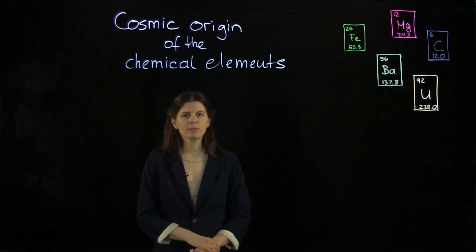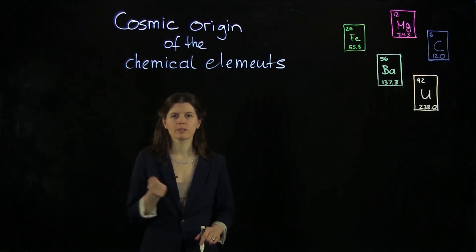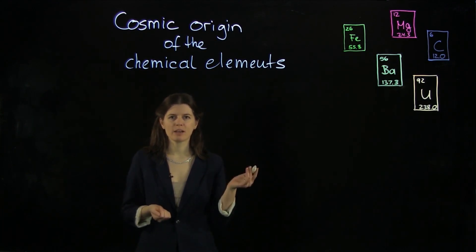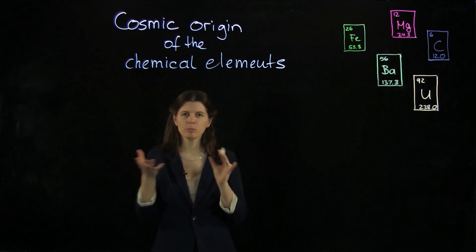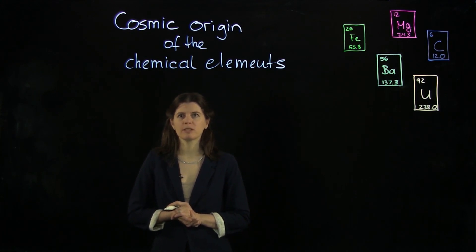We want to talk about the cosmic origin of the chemical elements today. In order to understand where the elements come from, we need to consider two different components: one is nuclear physics and one is astrophysics. They're nicely combined when we want to understand where the chemical elements come from.